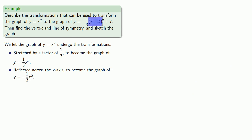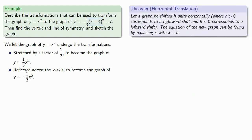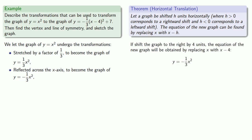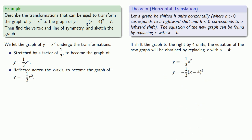We also have an x minus 4, and this suggests a horizontal translation. If we shift the graph to the right by 4 units, the equation of the new graph will be obtained by replacing x with x minus 4. And if it's not written down, it didn't happen — so write things down. We've shifted our graph to the right by 4 units to become the graph of y equals minus one-third times x minus 4 squared.